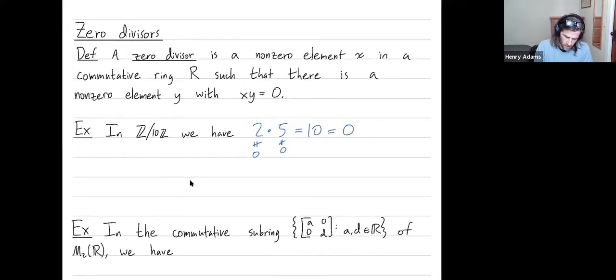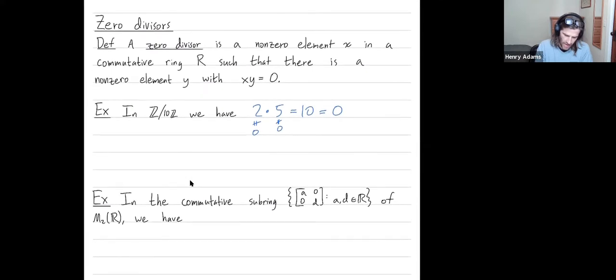Okay, here's another example. We talked about how 2x2 matrices form a ring. It's not a commutative ring because matrix A times B does not need to equal matrix B times A.